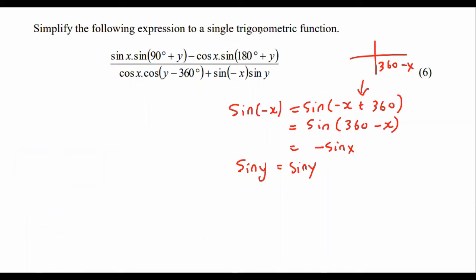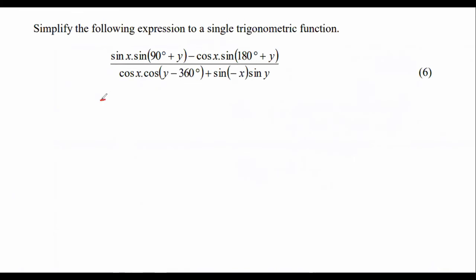All right. So for the first part, we said that sin x just stays sin x. Sin of 90 plus just became cos y. Then this was cos x. This one was negative sin y. Just remember, there is a multiply in between there. That's important. And then that's going to be over cos x. This one just became cos y. This one became plus. And then this part became negative sin x and then sin y. So those are multiplied. Those are multiplied. Fantastic.